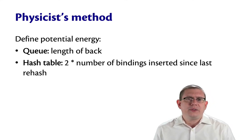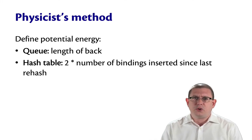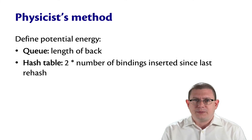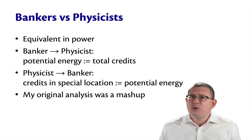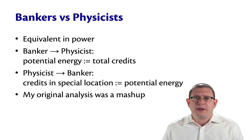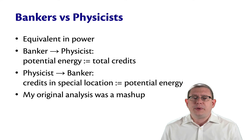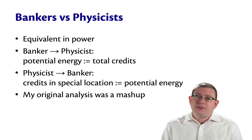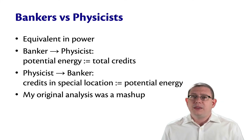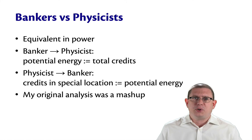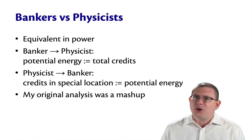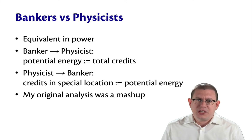You might notice right away that there's a lot of similarity in the analyses of queues and hash tables between the banker's method and the physicist's method. That's no accident — they're actually equivalent in power. They're just different metaphors for understanding the same thing. If you want to take a banker's method analysis and turn it into a physicist's method, just define the potential energy to be the total number of credits stored up at all elements in the data structure. If you want to go the other direction, find some designated location in the data structure, store all the credits only in that one location, and make sure it's the potential energy that's stored there.